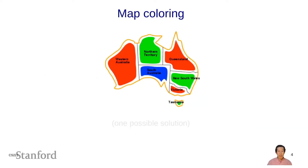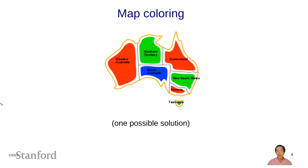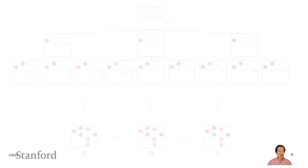Here is one possible solution: we can color Western Australia red, Northern Territory green, and so on. You can double-check that no two adjacent provinces have the same color. This is simple enough to solve by hand, but as usual, we want to ask: what are the algorithmic principles, and how do we generalize to solve problems like this when we encounter them?